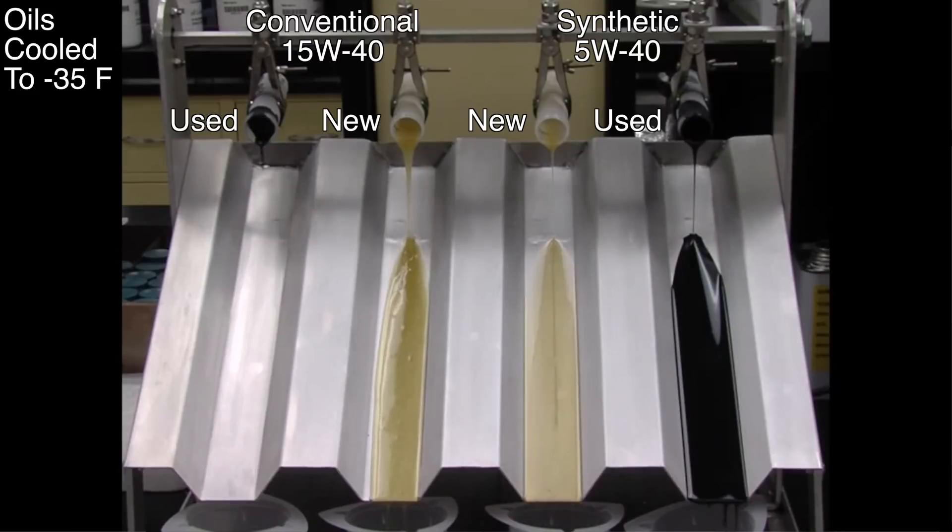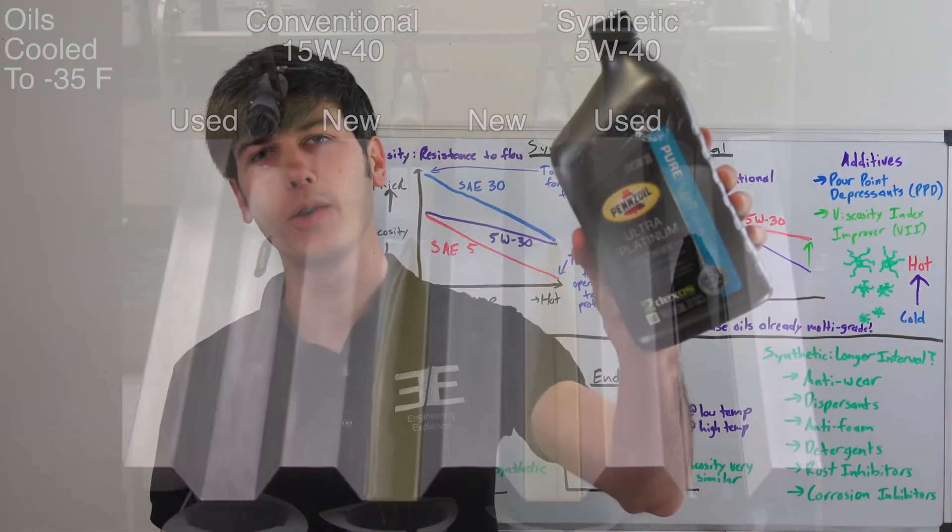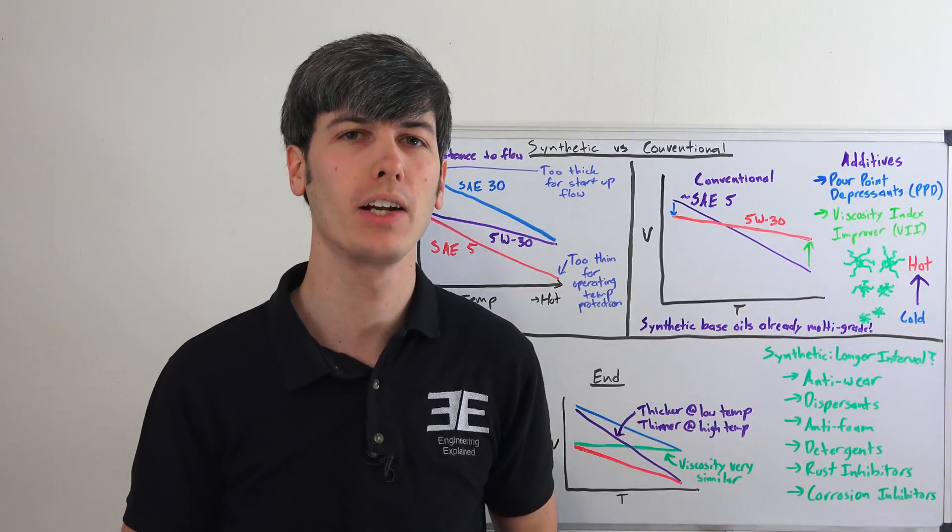So what does this mean for the consumer what this demonstrates is that towards the end of your engine oil drain interval for your car if you're using conventional oil you will have significantly changed the viscosity properties of your oil meaning less protection using synthetic however means you'll retain the viscosity properties of the oil for a longer duration and thus your engine will be better protected towards the end of the oil drain interval.